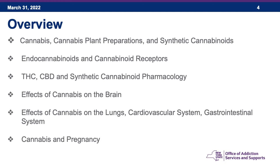Our overview for today: I'm going to review cannabis, cannabis plant preparations, and synthetic cannabinoids; endocannabinoids and cannabinoid receptors; THC, CBD, and synthetic cannabinoid pharmacology; the effects of cannabis on the brain, including psychiatric conditions; the effects of cannabis on the lungs, cardiovascular system, and gastrointestinal systems; and cannabis in pregnancy.